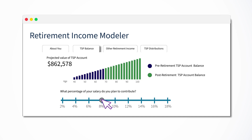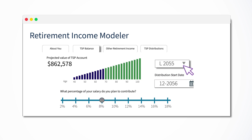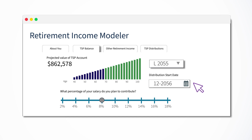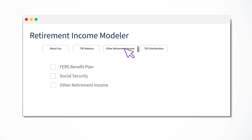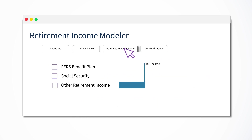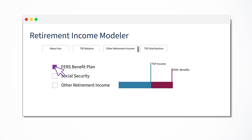On the TSP Balance tab, view how your contribution rate can affect your estimated account balance over time, based on the selected L fund and distribution start date. On the Other Retirement Income tab, you can add any other sources of income, which could give you a better view into the likelihood of meeting your monthly income goals in retirement.